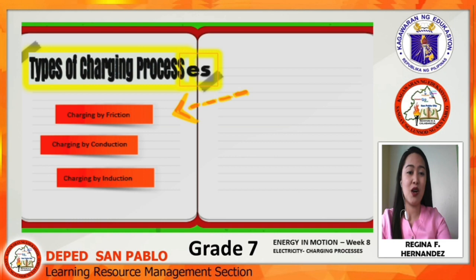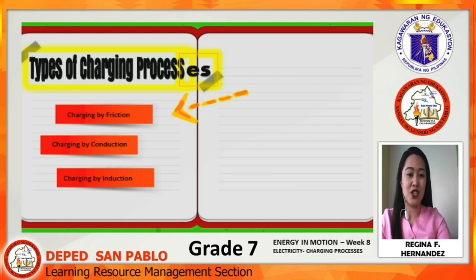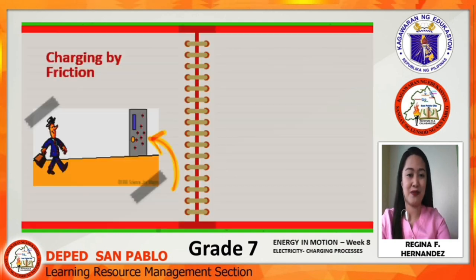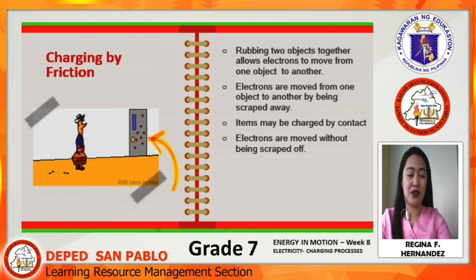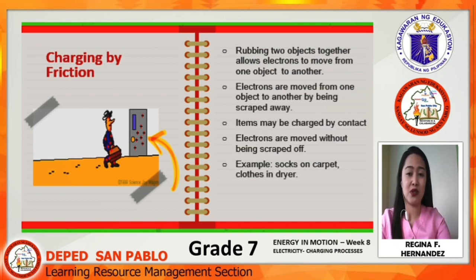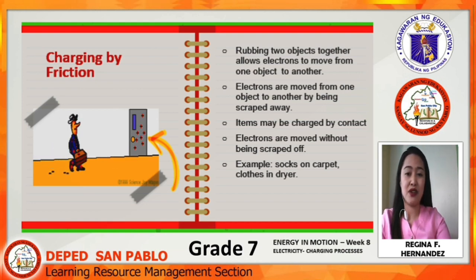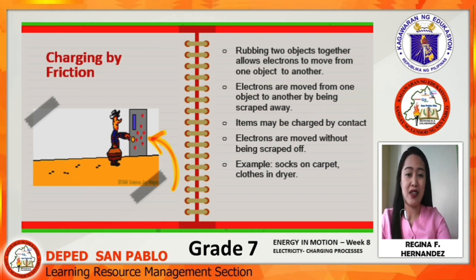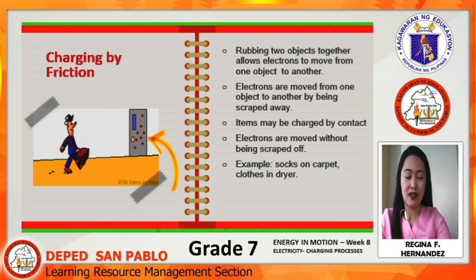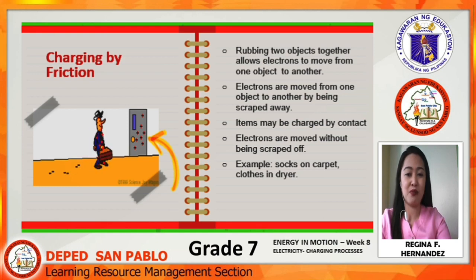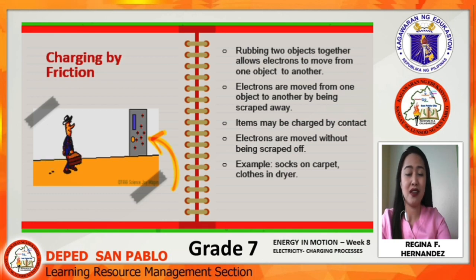Let us now proceed to the different types of charging processes. We have three: charging by friction, charging by conduction, and charging by induction. Charging by friction involves rubbing two objects together, allowing electrons to move from one object to another — electrons are moved by being scraped away. Items may also be charged by contact, where electrons are moved without being scraped off. Examples include socks on carpet and clothes in a dryer.